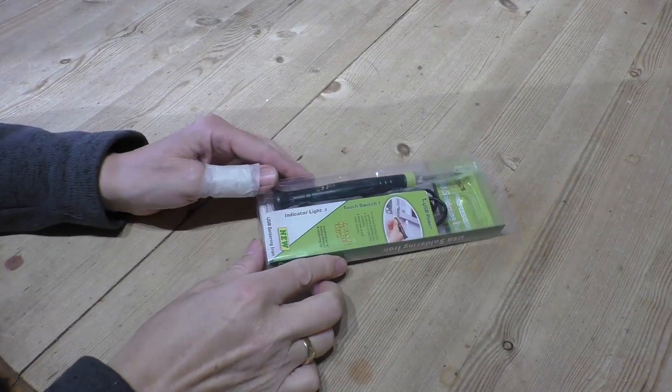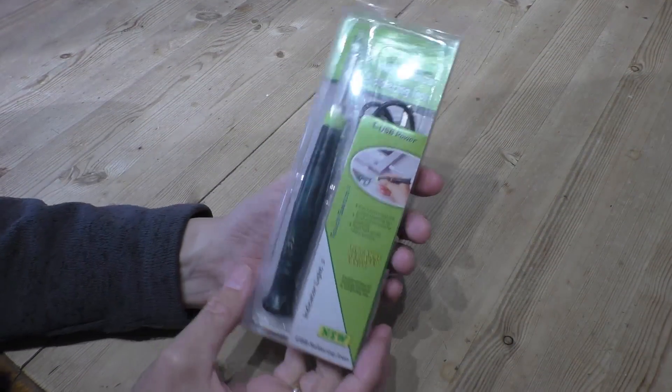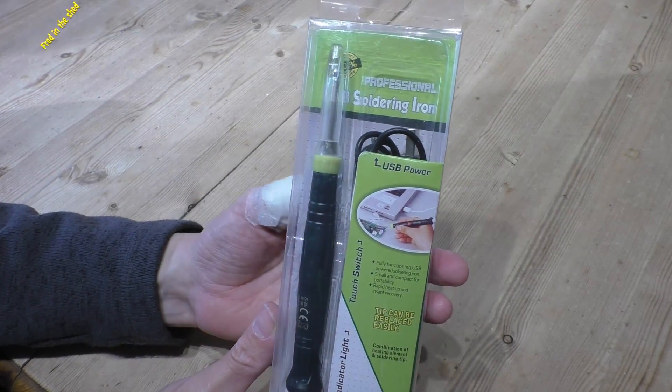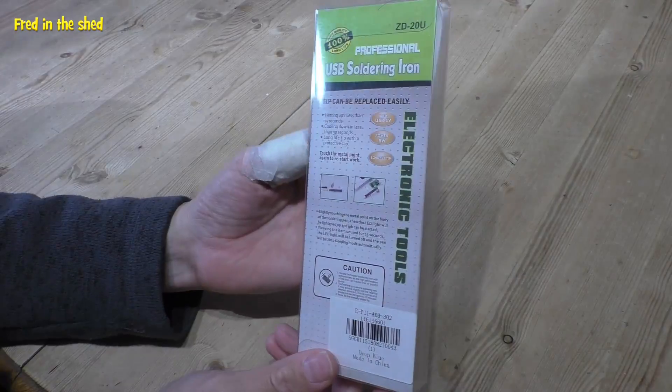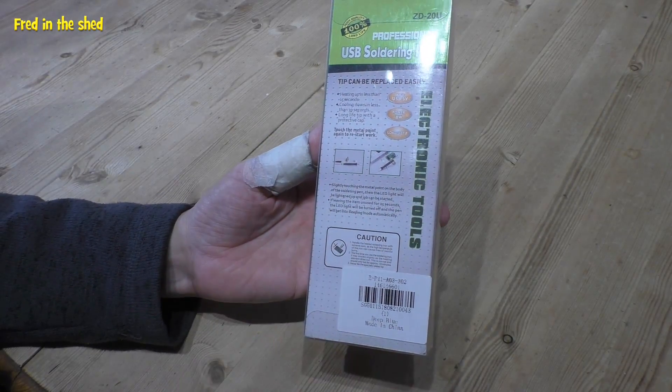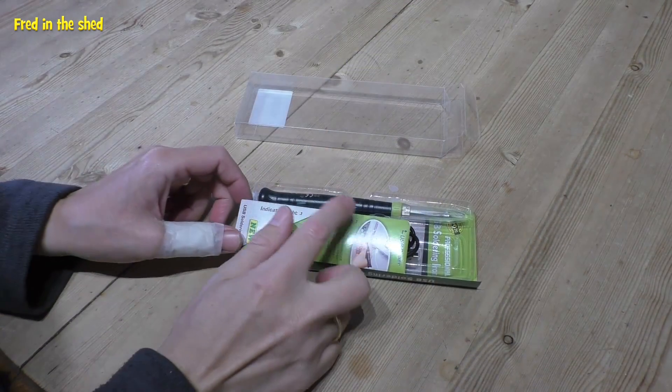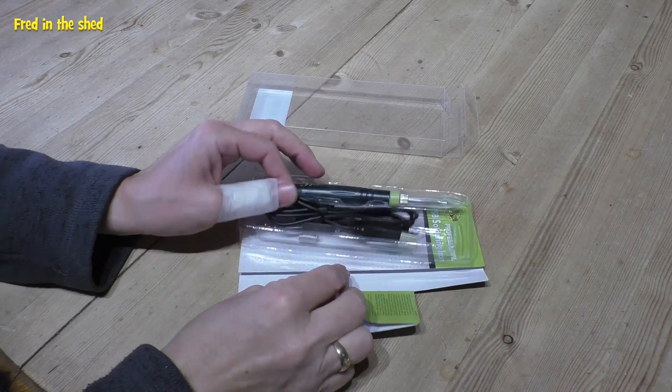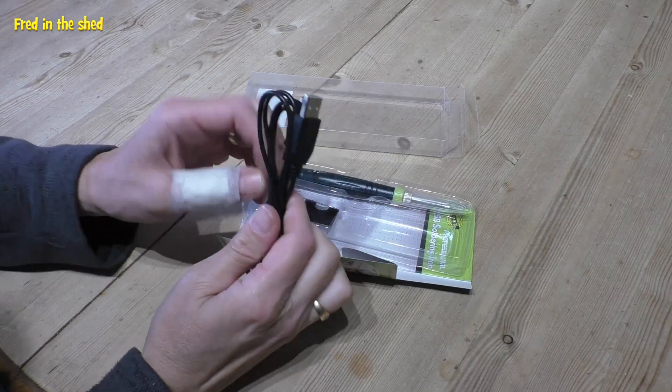Hello, welcome back to Fred in the Shed and a gadget video again this time. In this video we're going to be looking at this very tiny pencil soldering iron sent to me by Gearbest for review. Two things make this soldering iron a little bit special. Firstly is the price. Like most things from Gearbest, it is incredibly cheap.